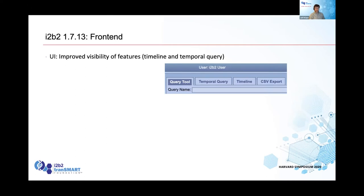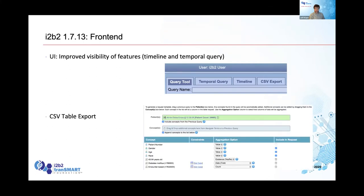For version 1.7.13, we're making UI tweaks to increase visibility of great features people don't know about. For example, there's a temporal query tool in the i2b2 web client that enables very complex queries — we're putting it on a prominent tab. Similarly for a timeline view. We're also adding a CSV table export plug-in developed by the ACT group at Mass General Brigham, allowing interactive development of large flat tables for deeper analysis.